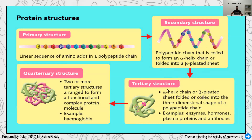In the tertiary structure, the alpha helix or beta pleated sheet can be further folded and coiled to form a 3D three-dimensional shape — zigzag, coiled, and folded, with alpha and beta regions throughout. Examples of tertiary structure proteins are enzymes, hormones in our body, plasma proteins like albumin, and antibodies, which we will learn more about in Form 5 transport. All these are made of the tertiary structure.